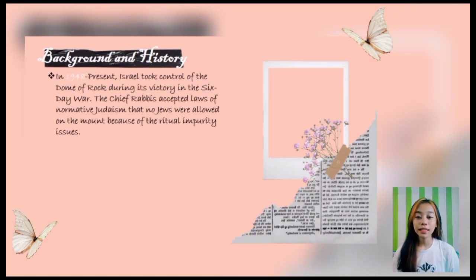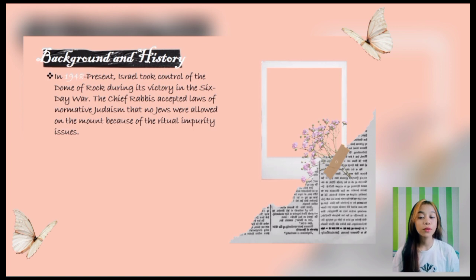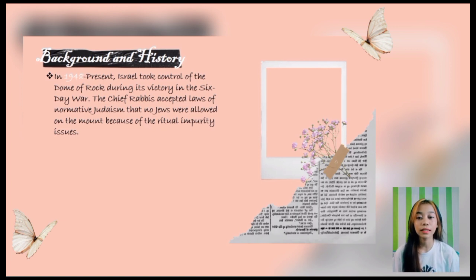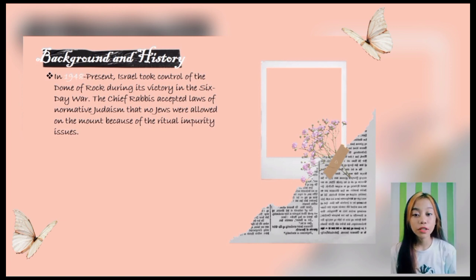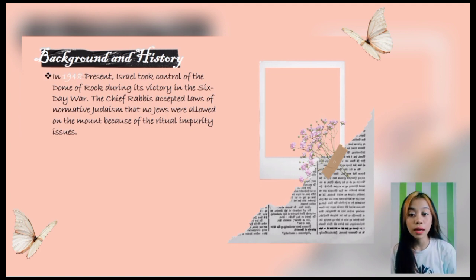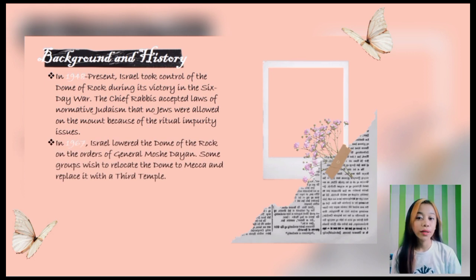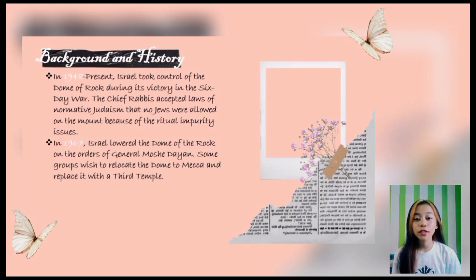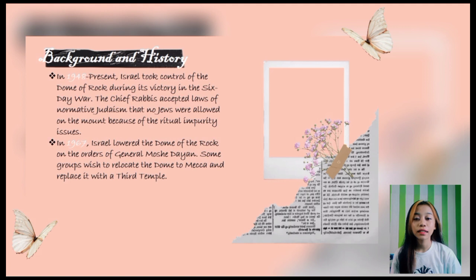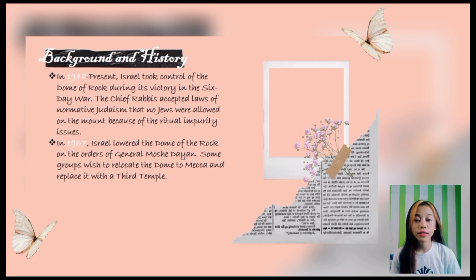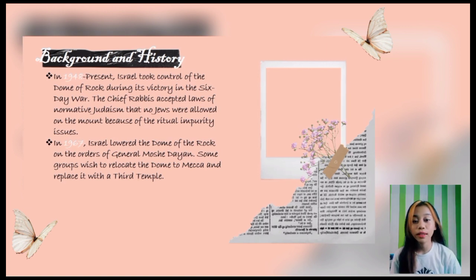From 1948 to the present, Israel took control of the Dome of the Rock during its victory in the Six-Day War. Under Jordanian rule, Jews were forbidden from entering the Old City, and the chief rabbis accepted the laws of normative Judaism that no Jews were allowed on the mount due to ritual impurity issues. In 1967, Israel handed over the Dome of the Rock on the orders of General Moshe Dayan, and the Muslim Waqf was invested with the authority to manage the Temple Mount. Some groups wished to relocate the Dome to Mecca and replace it with a third temple.